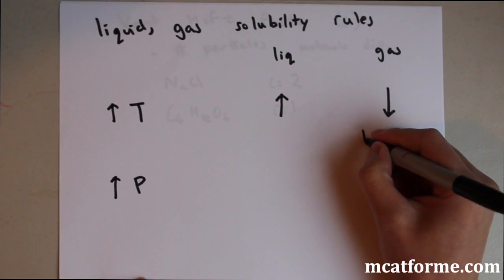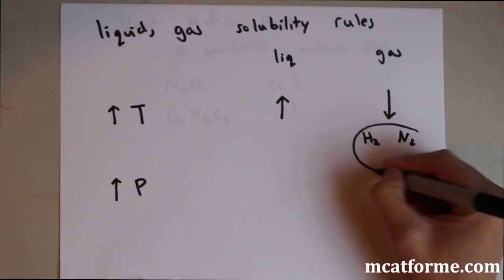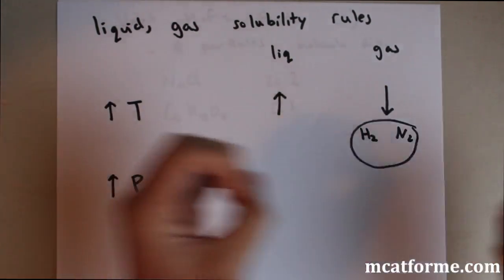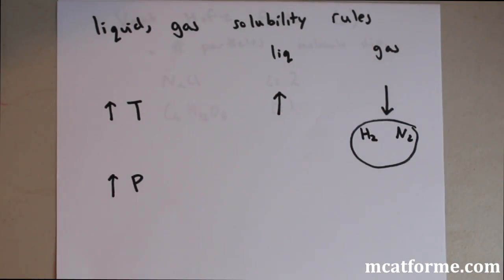For example, if we had H2 and we had N2 in a container, and these for some reason are soluble with one another, and then we increase the temperature, slowly they'll become insoluble and they will separate from each other. So that's just an example.